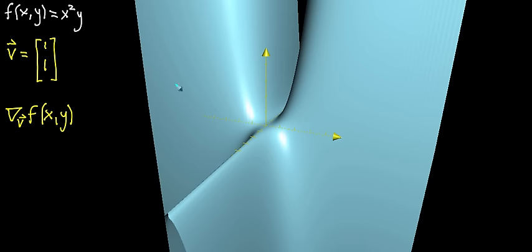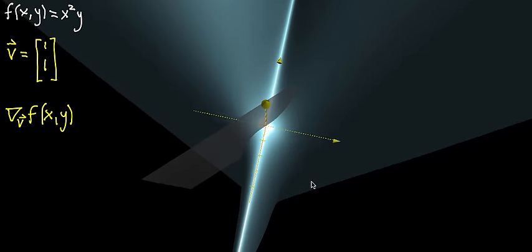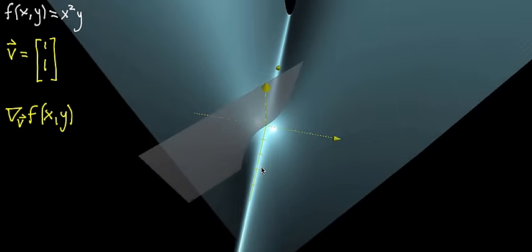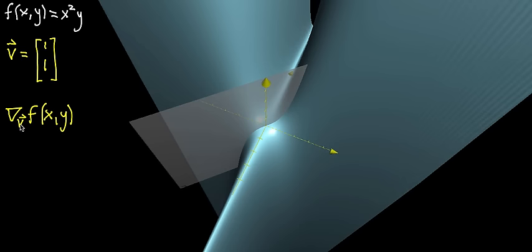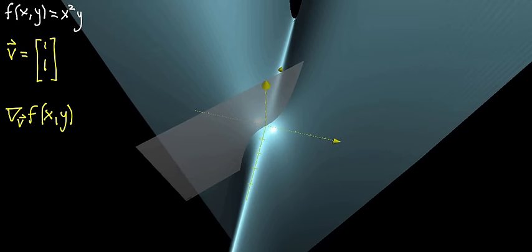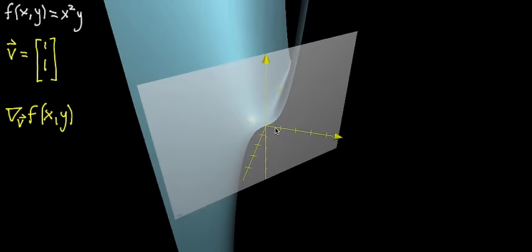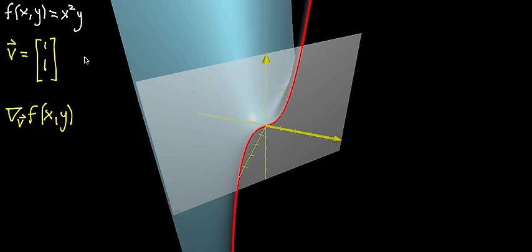I'll show you what I mean. You can imagine slicing this graph by some kind of plane, but that plane doesn't necessarily have to be parallel to the x or y axes — that's what we did for the partial derivative. This is going to be a plane that tells you what movement in the direction of your vector looks like. I'm going to go ahead and slice the graph along that plane, and color in where the graph intersects that slice. This vector v is living on the xy plane, and it's determining the direction of the plane we're slicing with.